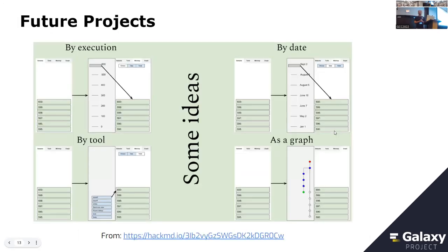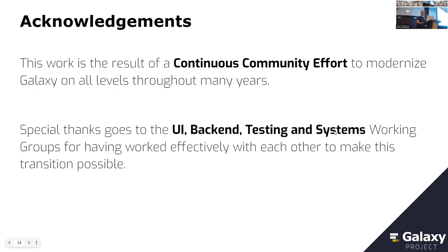We have other ideas and I encourage everyone to join the conversation on GitHub and in our additional document. For example, one suggestion is: can we have scrollers that help us navigate our history by going to a certain region of certain dates or highlighting certain tools? The technology enables us to do these things — we just have to decide what's most useful for users. I want to really thank the entire community — this is a continuous community effort spanning several years and very different projects across the entire modernization of Galaxy, which made this possible.